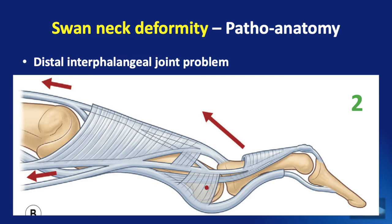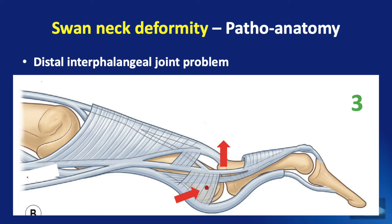This increased extension force at the proximal interphalangeal joint causes hyperextension at this joint. When this deformity continues, the lateral bands that are normally on the side of the finger translocate to the dorsal aspect and ultimately move dorsal to the joint axis of the proximal interphalangeal joint, adding to the extension force at the PIP joint and completely establishing the swan neck deformity.